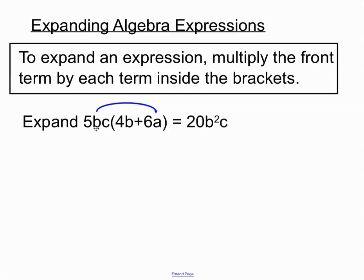We have to do that second one as well every time. So that front term 5bc gets multiplied by the 6a. 5 times 6 is 30. And then we just have a b and a c and an a. Now they aren't doubling up at all, so that just gets listed beside it.